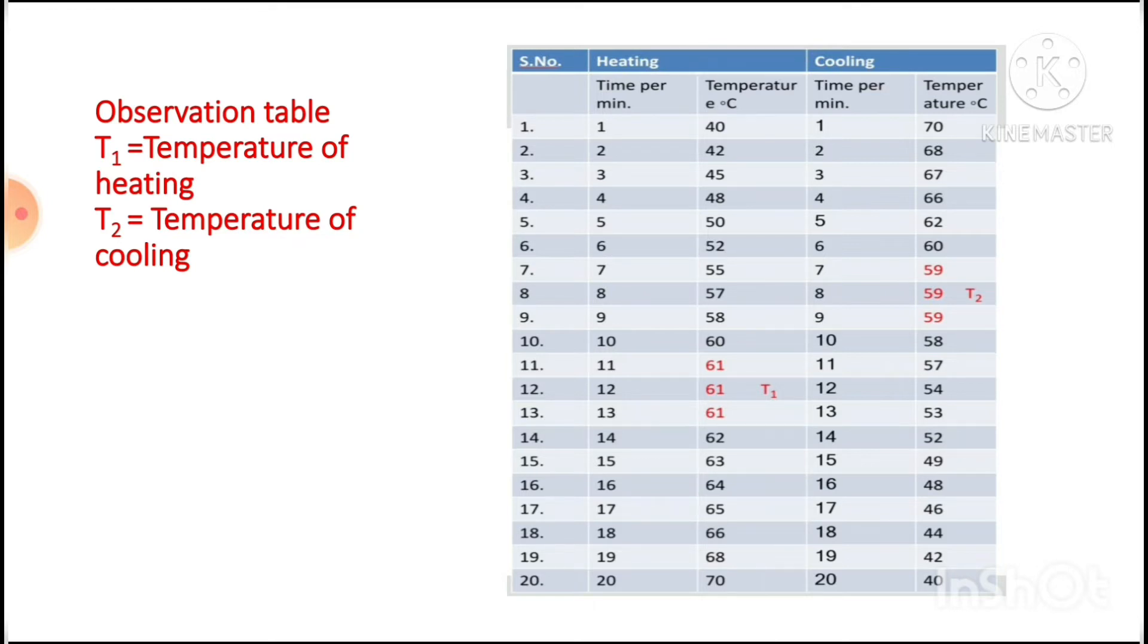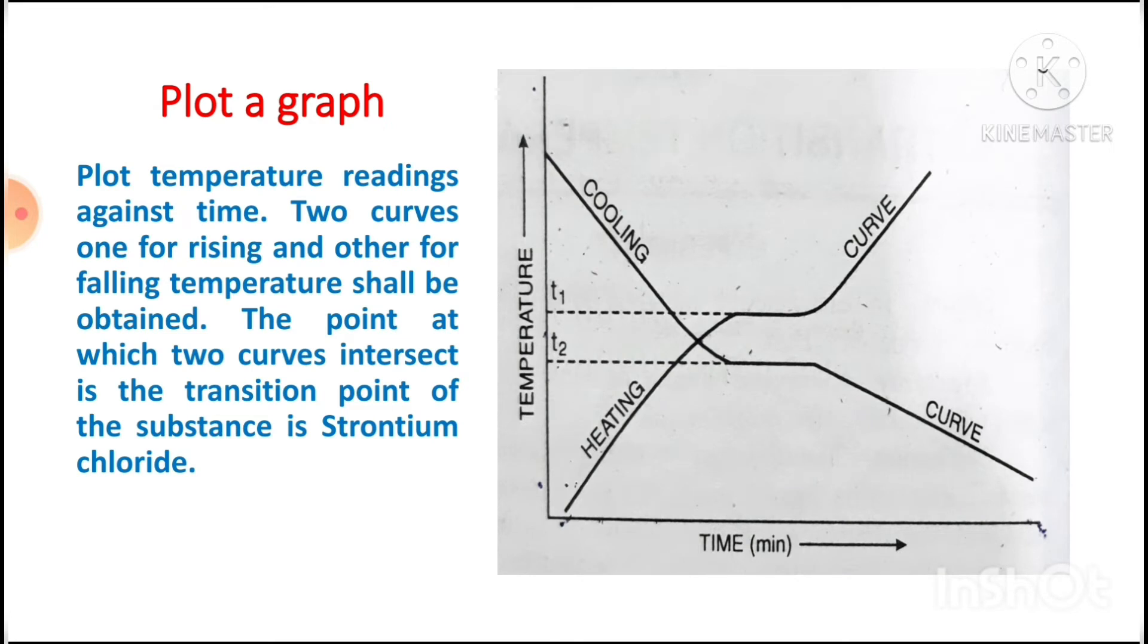This is our plot: plot temperature reading against time. Two curves, one for rising and other for falling temperature shall be obtained. The point at which two curves intersect is the transition point of the substance, that is strontium chloride.